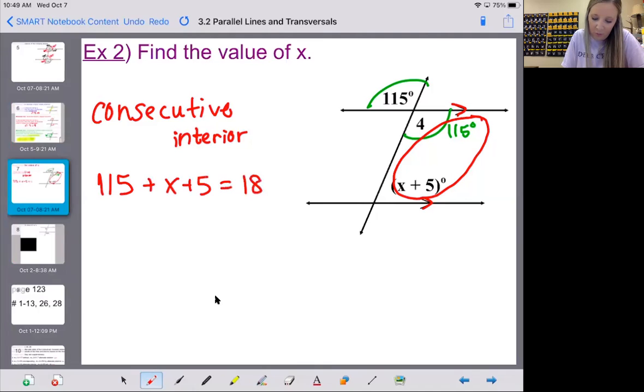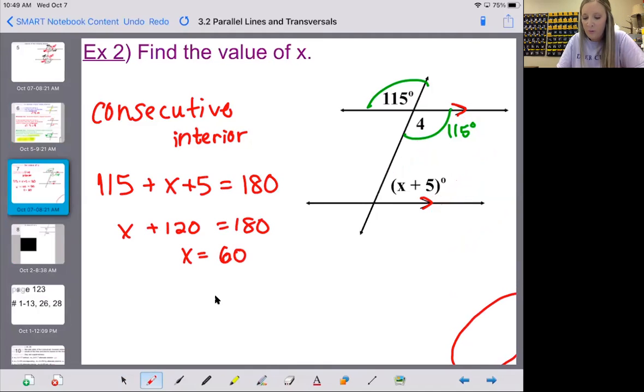And the total should be 180 since they are consecutive interior and supplementary. If I collect my like terms, I have 120. If I subtract 120 to the other side, I get X equals 60. Remember X equals 60, that is not the degree of the angle. So if they do ask you for the angle, make sure that you put the 60 back in here. So that would be 65 total degrees. Just pay attention to what they asked for. This time they said find the value of X, so of course that is 60.